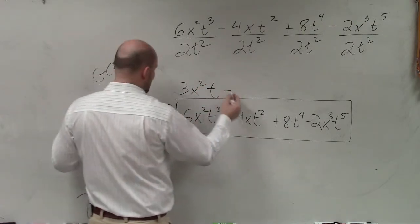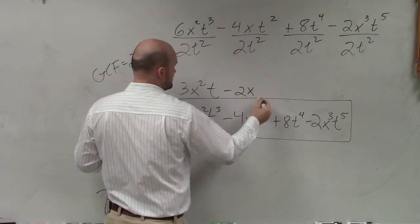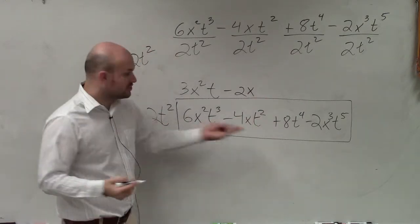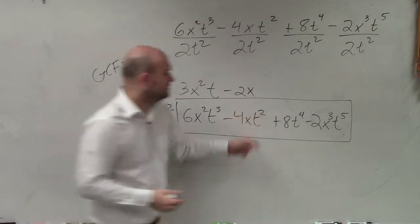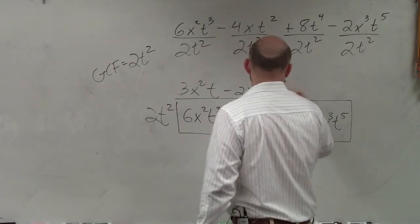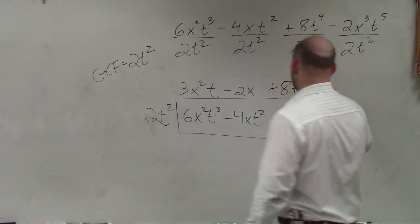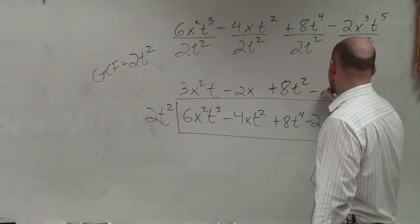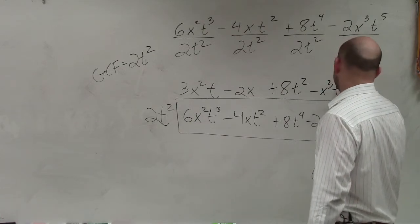And that's t minus this one to be 2x, right? There's no t because I already have t squared. Plus 8t squared minus x cubed t cubed.